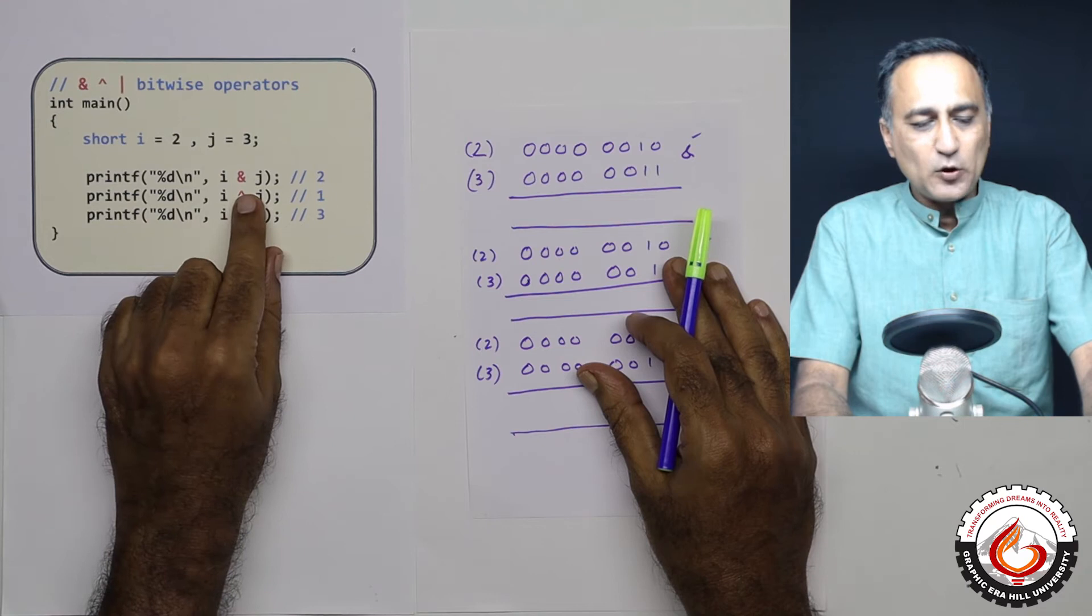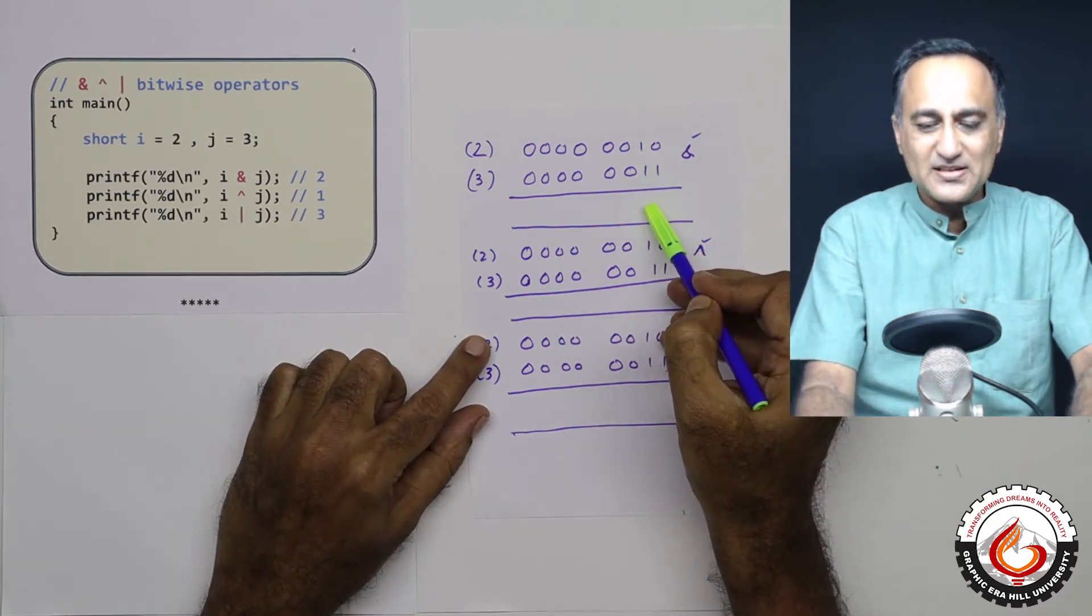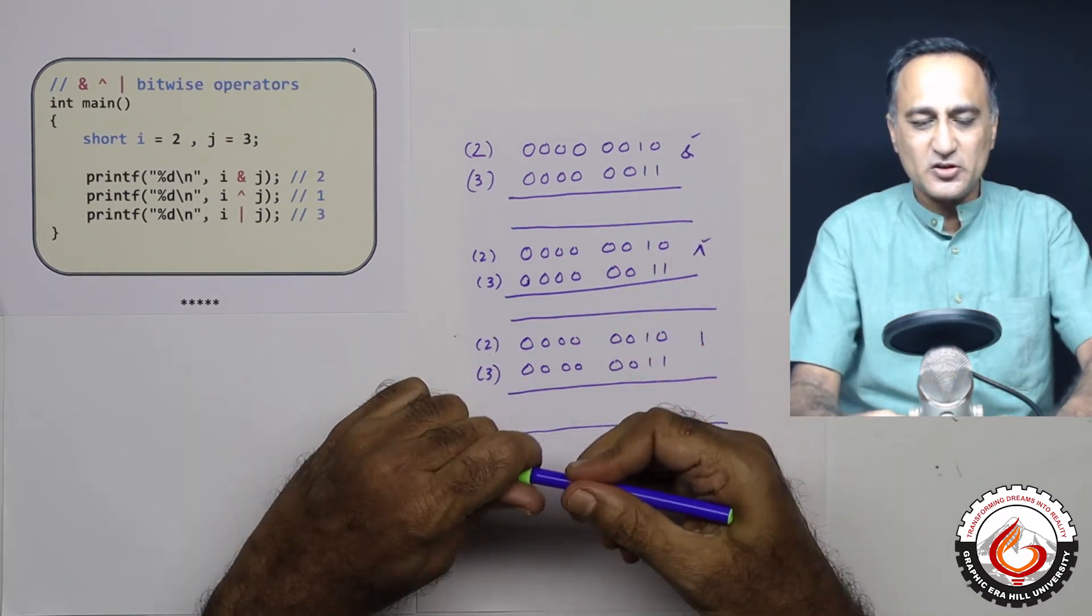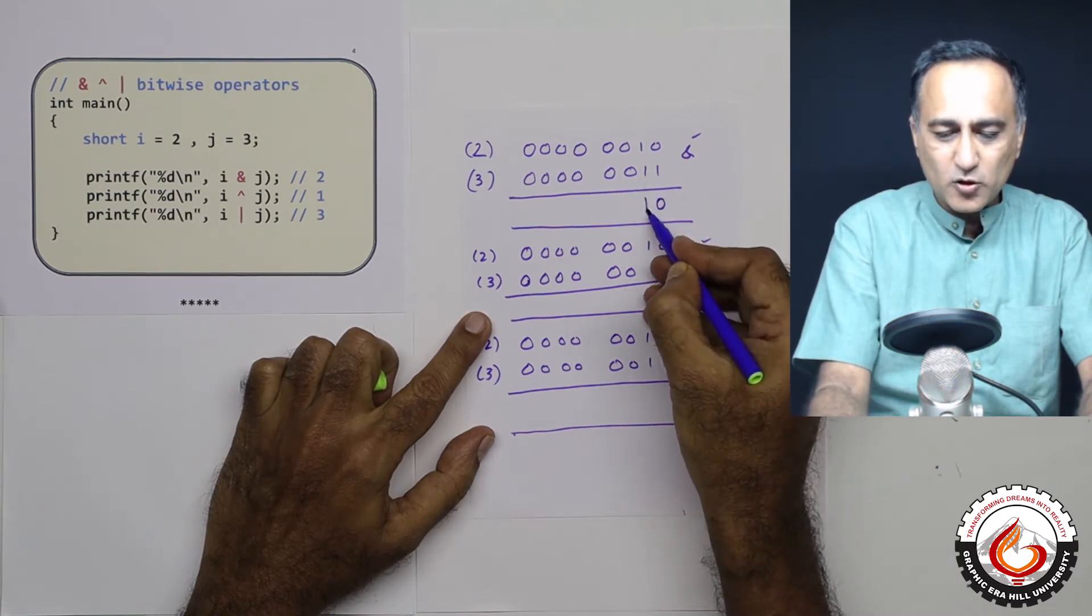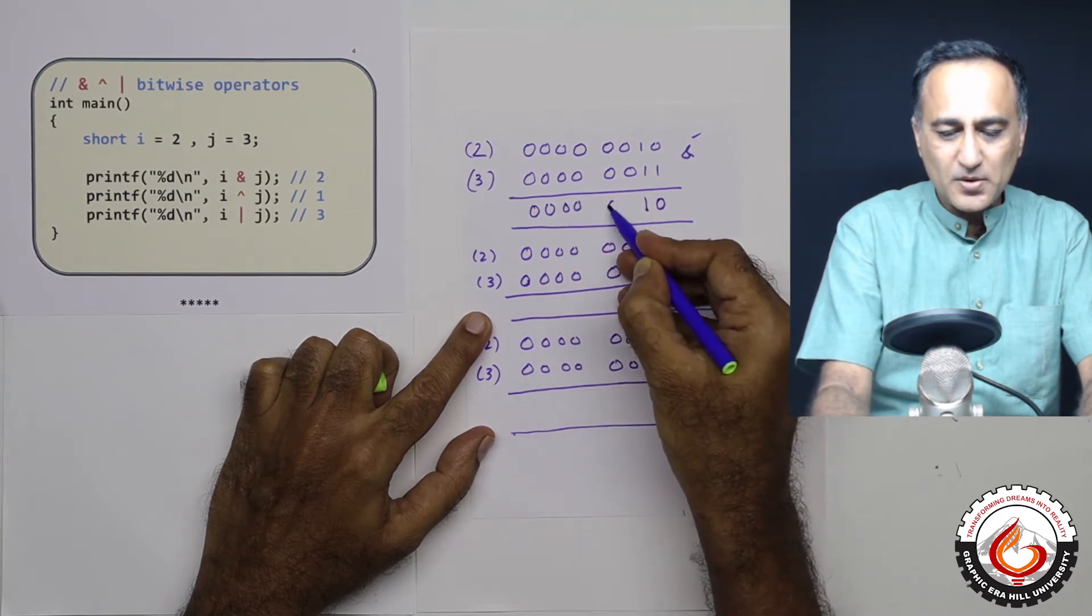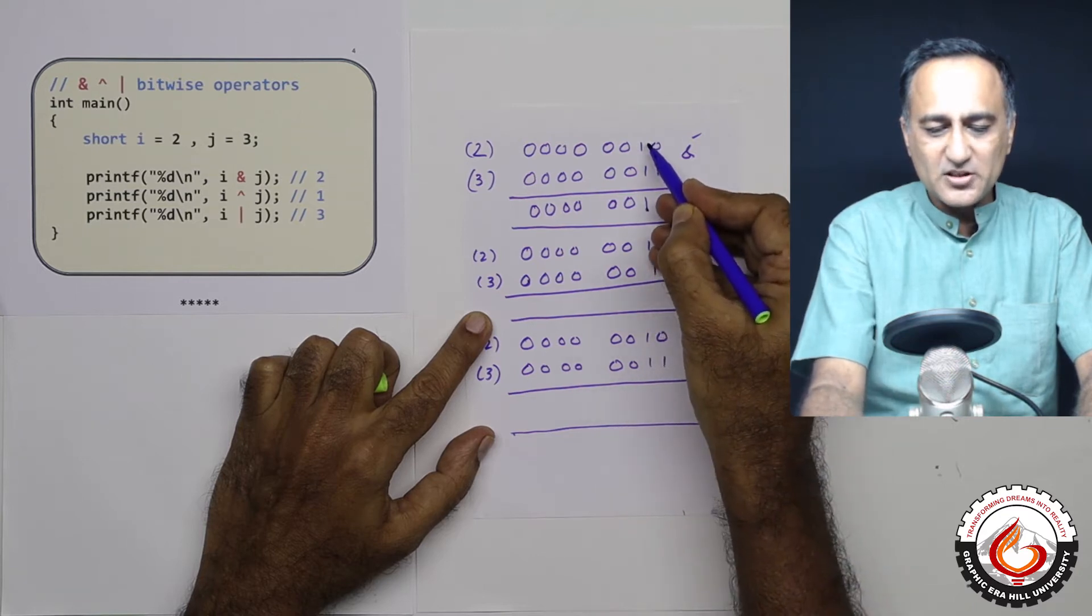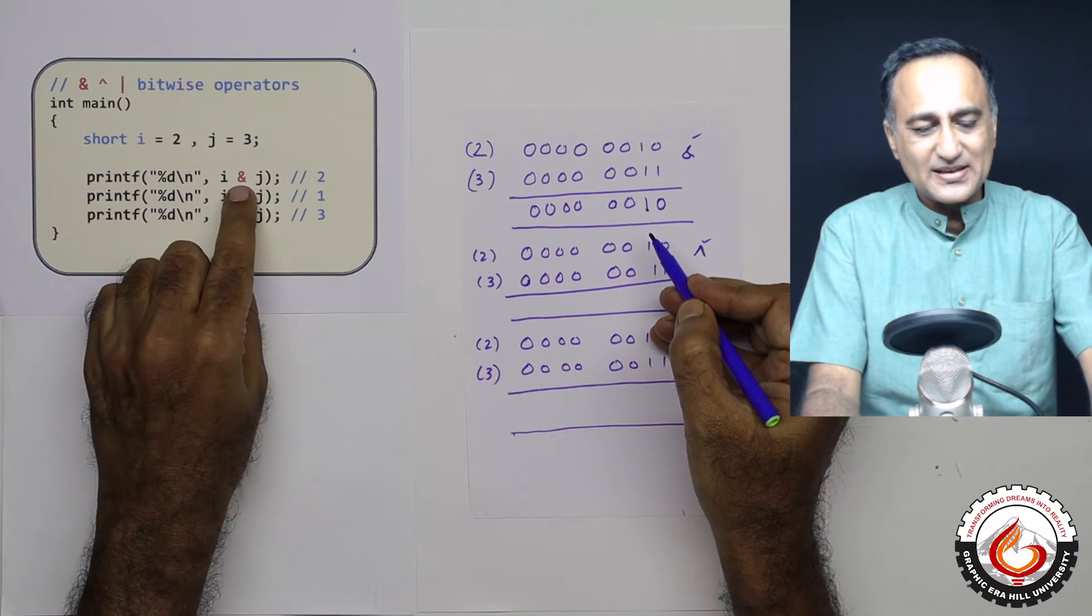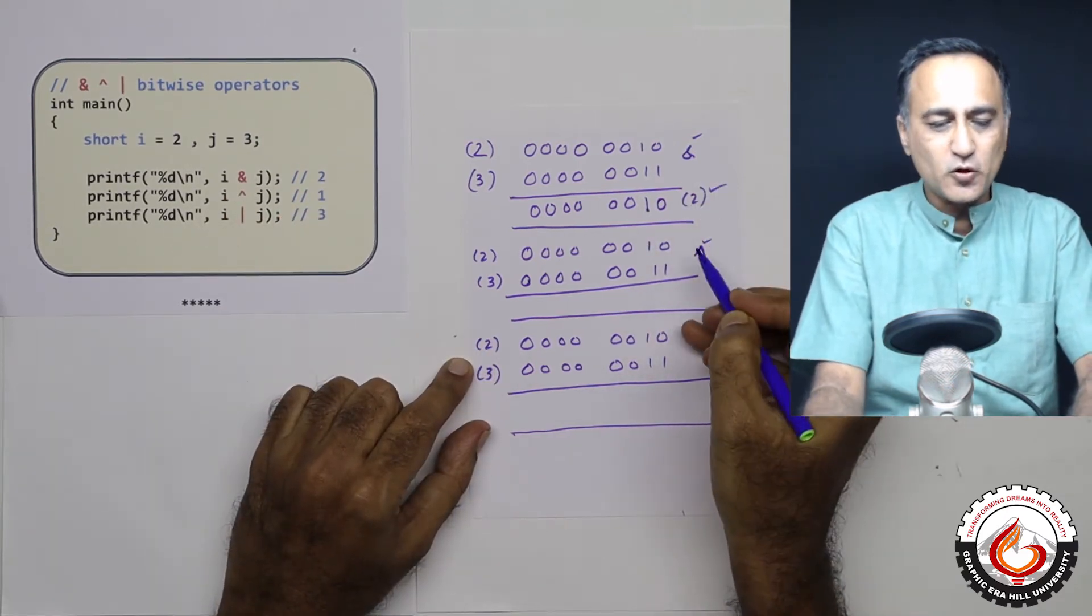When I do an AND operator, AND means if both the bits are 1, the resulting bit is going to be 1. Otherwise for all other cases the bits are going to be 0. So 1 and 0 is 0, 1 and 1 is 1. For rest of all these cases, it's going to be 0 and 0. Now what is this 0010? It is 2. So 2 and 3 bitwise is going to give you the answer 2.